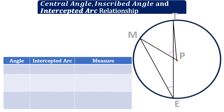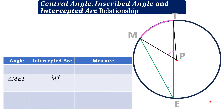First, let us identify the angle, the intercepted arc, and how to find the measure. From the figure on the right, the first angle is angle MET, and its intercepted arc is arc MT. The other angle, angle MPT, also has an intercepted arc of arc MT.